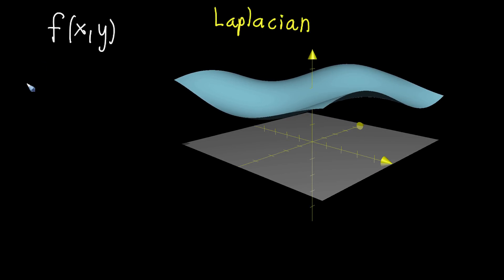So the Laplacian of f is denoted with a right-side-up triangle, and it's going to give you a new scalar-valued function of x and y. So it's going to give you a new function that takes in a two-dimensional input and just outputs a number. And it's kind of like a second derivative, because the way that it's defined is that you take the divergence of the gradient of your function f.